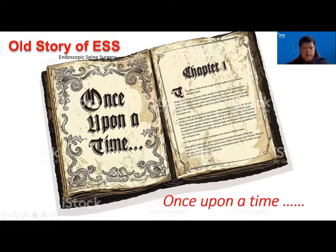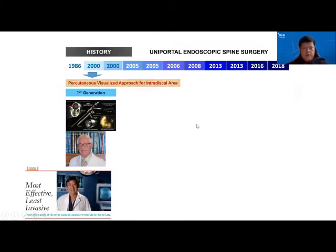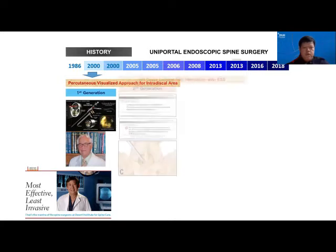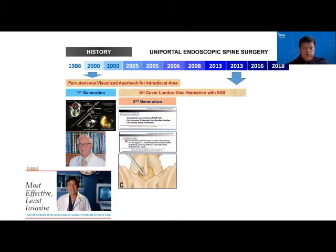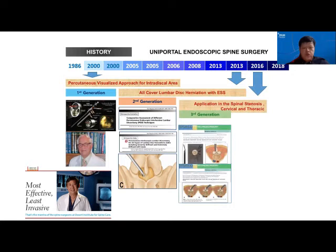Once upon a time, in the 1980s and the early 2000s, endoscopy started out being mainly in the transforaminal area. We would visualize with the endoscope and perform using a working channel through the transforaminal area. Subsequently, in the 2000s, it evolved into interlaminal as well as paraspinal approaches to endoscopy.